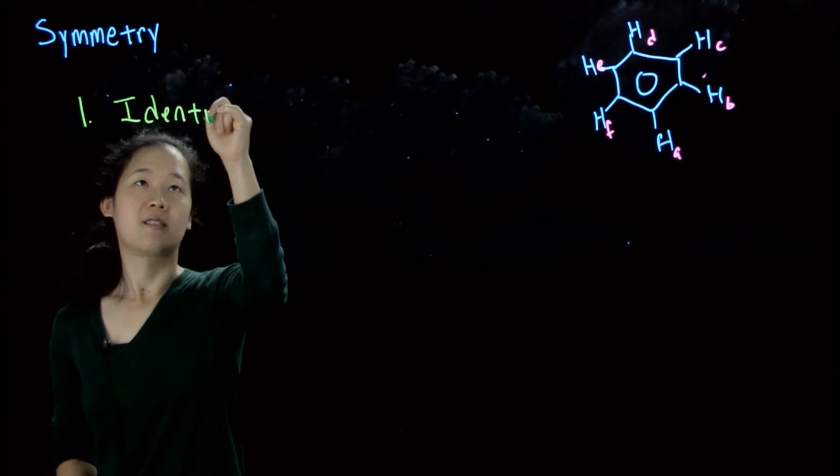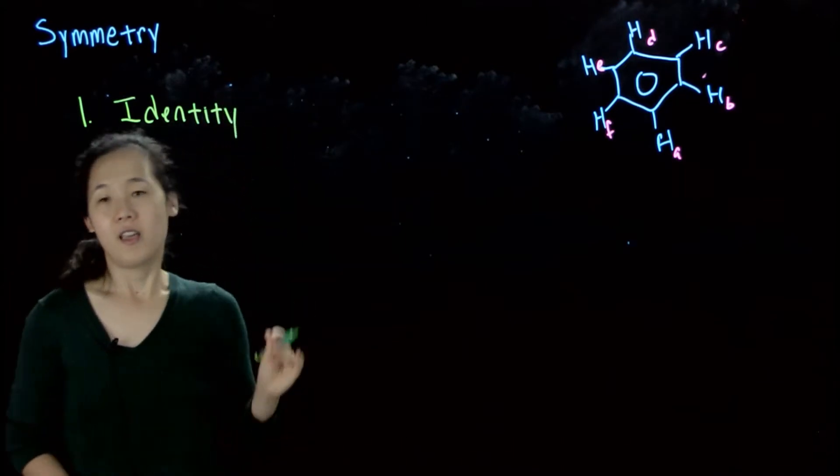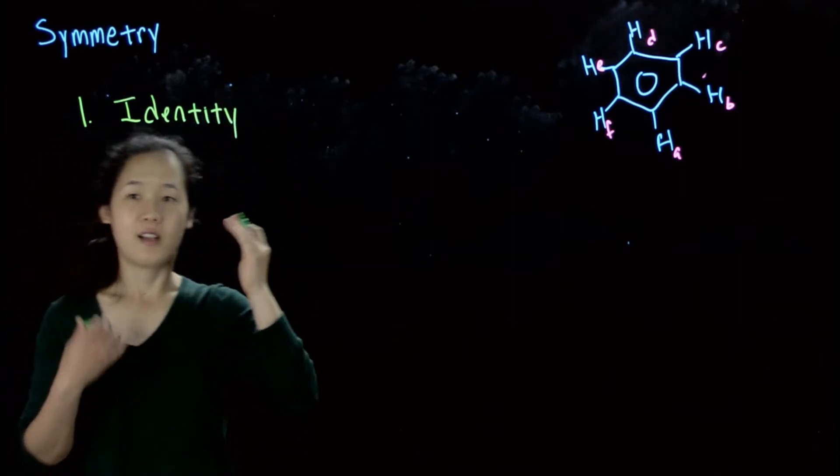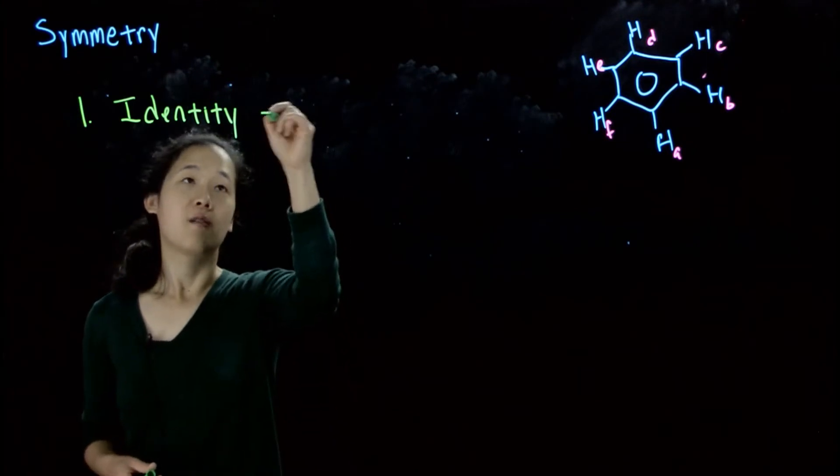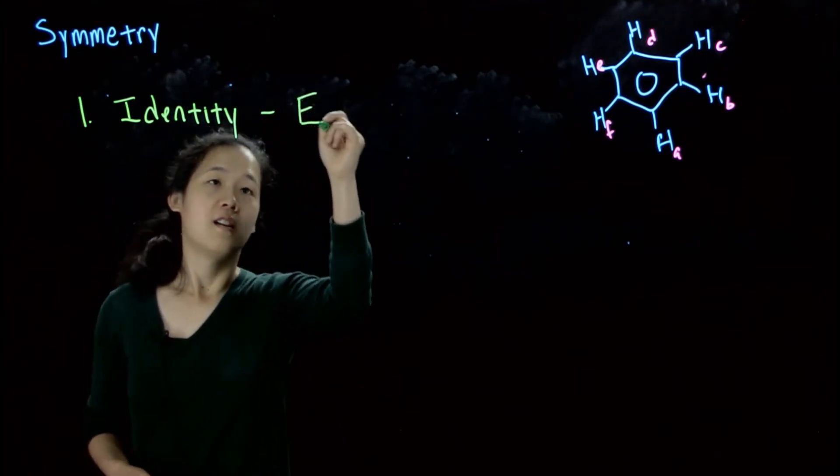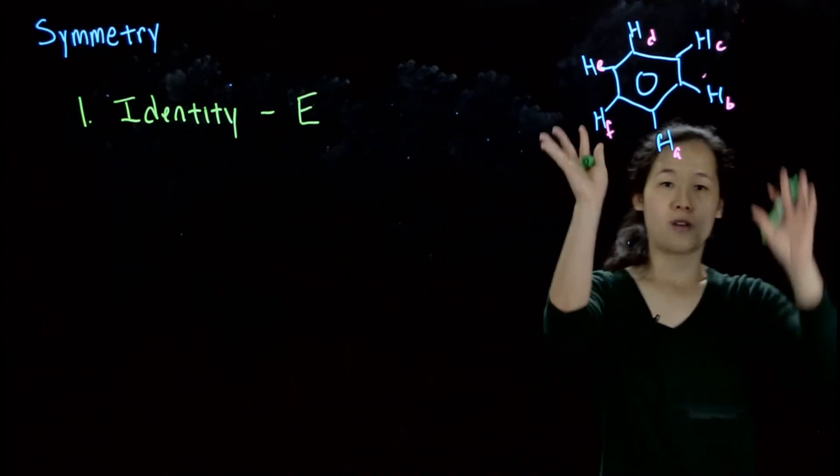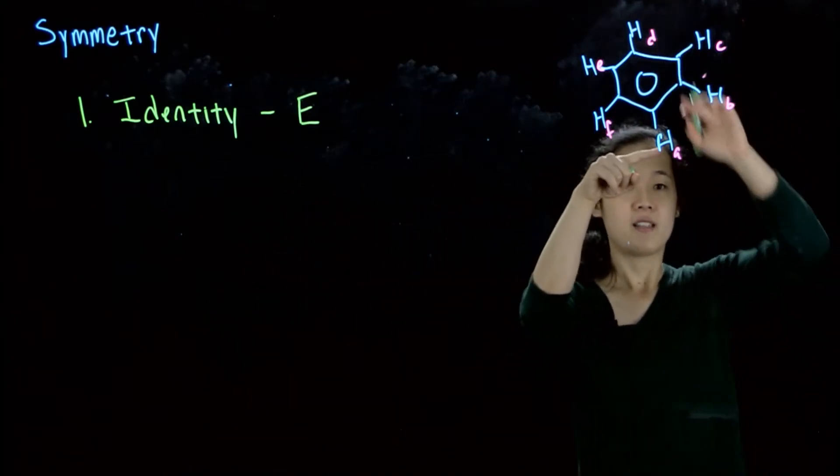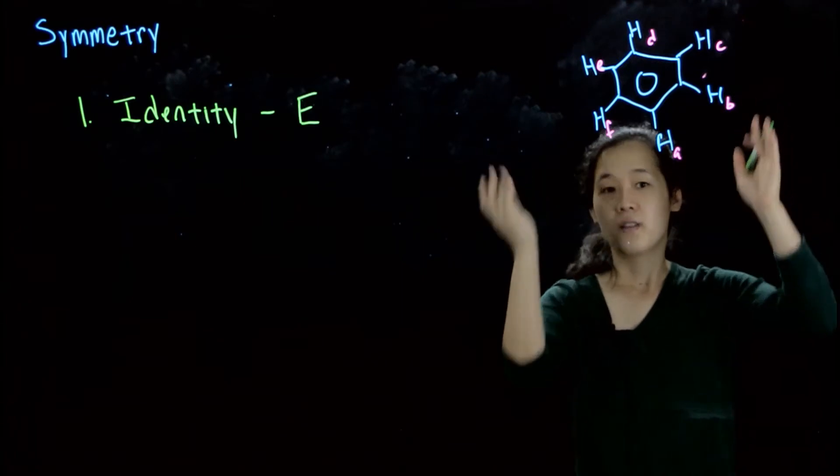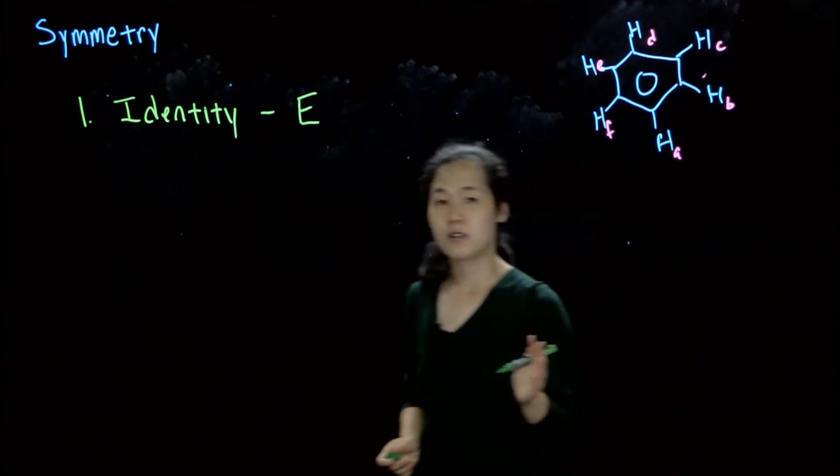So the first symmetry element that every molecule has is the identity. And I don't know if you'll consider this an actual symmetry operation, but if you don't do anything to the molecule, it stays in the same orientation. So we refer to this as the E operation. So identity operation, if we take this benzene molecule, don't do anything to it, A stays with A, D stays with D, it's still symmetric to itself. So every molecule has this.